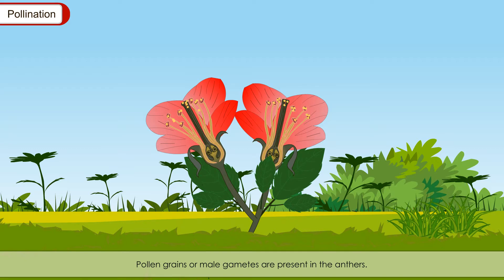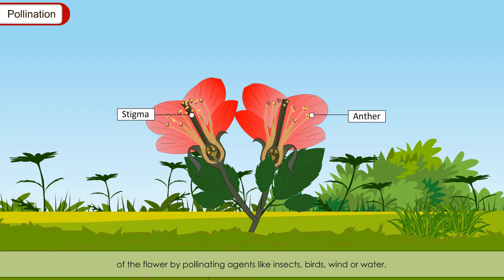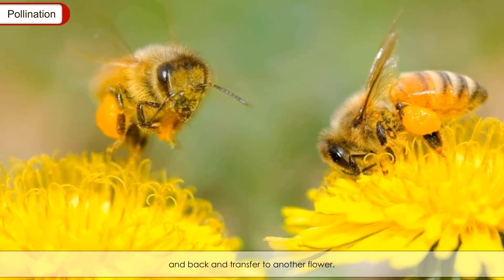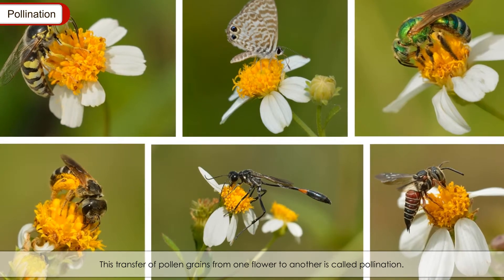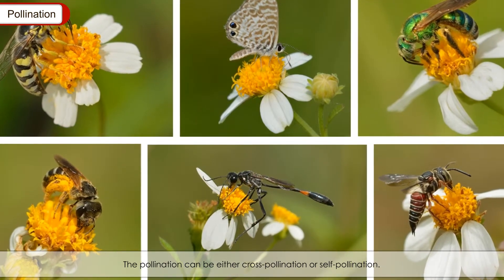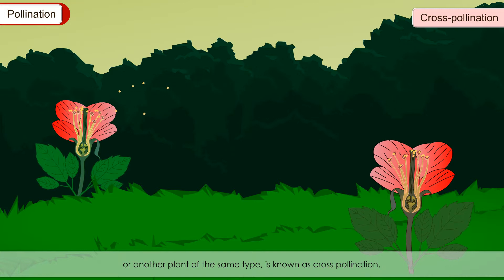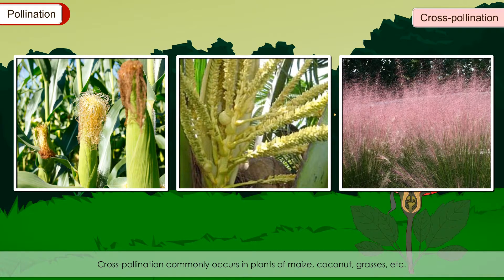Pollination: Pollen grains or male gametes are present in the anthers, which are sac-like structures on the top of the filament. When anthers burst and release pollen grains, these are carried to the stigma of the female part by pollinating agents like insects, birds, wind or water. This transfer of pollen grains from one flower to another is called pollination. Cross-pollination occurs when pollen is transferred from the anther of one flower to the stigma of another flower or another plant of the same type — as commonly seen in maize, coconut and grasses.